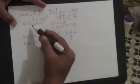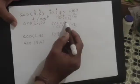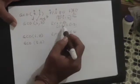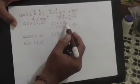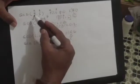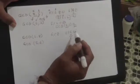So now in the next iteration, 6 mod 2 is 0. Therefore, we say that GCD of 8 and 6 is 2.